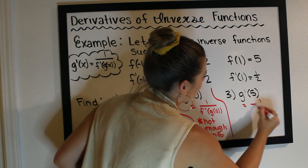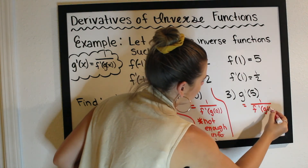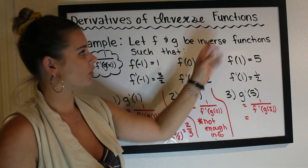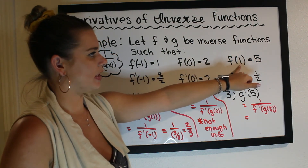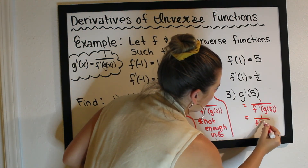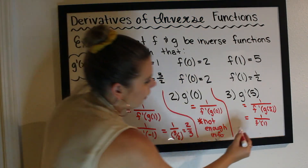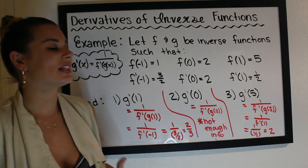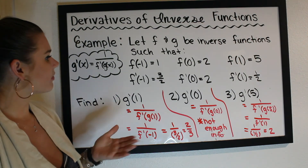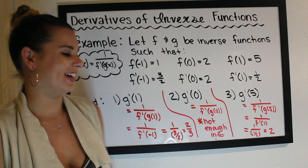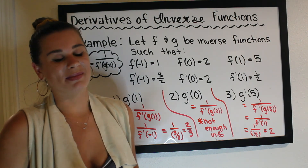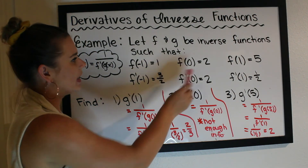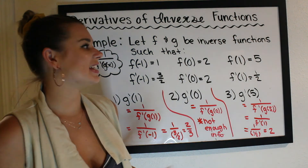For g prime of five: this equals one over f prime of g of five. We need g of five, which means looking for an output of five in f. We have f of one equals five, so g of five equals one. Therefore we get one over f prime of one. We know f prime of one equals one half, so this is one over one half, which equals two. You can see how useful it is to find the slope of a tangent line at an image point on inverse functions using these properties — you don't need to know every point on g of x if you have enough information about the original function f. That's it for today's video.